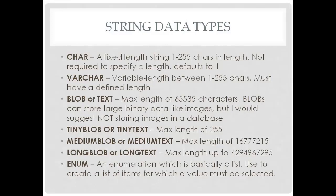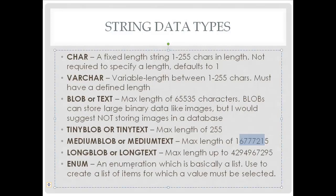Blobs can store large binary data like images, but I would not suggest keeping images themselves in the database. You want to keep the location of the image and have the image reside on your server. Tiny blob or tiny text has a max length of 255, medium has a larger max length, and long text or long blob has a huge max length. We also have an enum, which is an enumeration — basically a list used to create a set of items for which a value must be selected.